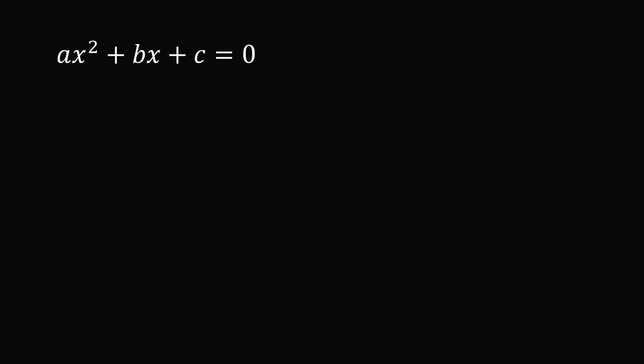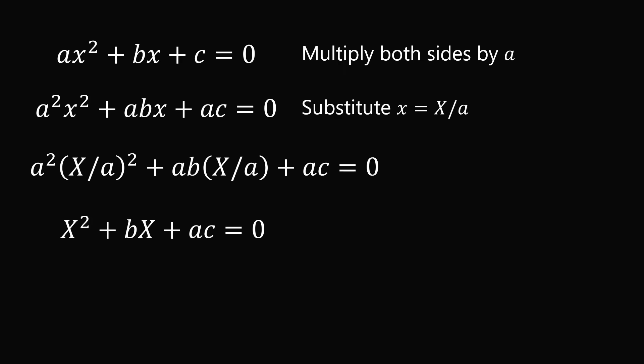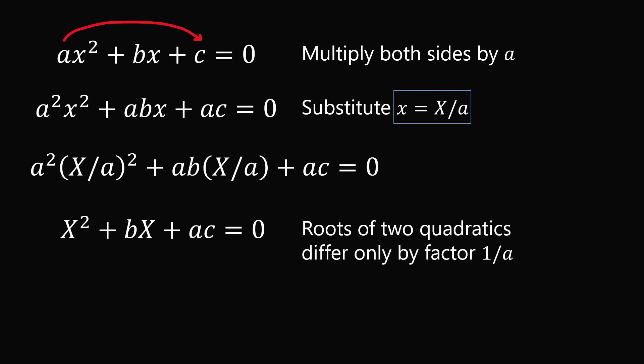Here's another way to see it. Starting with the general quadratic equation, multiply both sides by a. Now make the substitution that little x equals capital X divided by a. If we make this substitution and simplify, we get the quadratic equation: X squared plus b times X plus ac equals 0. This is exactly what happens when we slide the coefficient of a to the constant term c. Since little x equals big X divided by a, the roots of the two quadratics differ only by a factor of 1 over a. This explains the slide and divide method for finding roots.